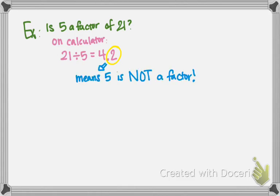So because it has that decimal portion, 0.2, it means that 5 is not a factor. It also implies that 4.2 is not a factor either. Factors are always going to be whole numbers. So once you see decimals or fractions or remainders, it's not a factor.